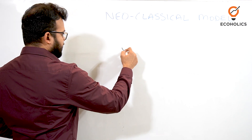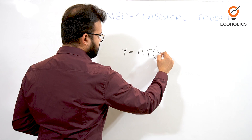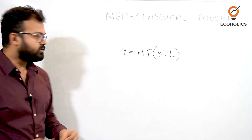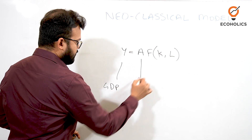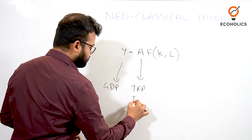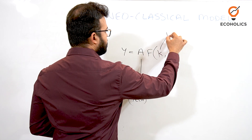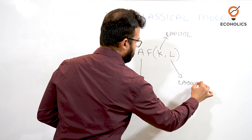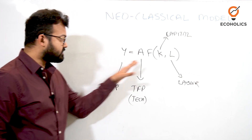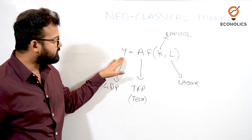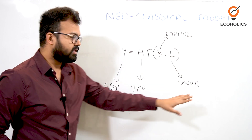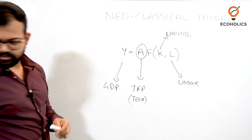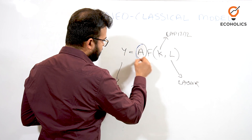When technology is exogenously determined, we write the basic equation: Y = A · f(K, L), where Y is the GDP growth rate, A is total factor productivity (which we call technology), f is the function, K is capital, and L is labor. This equation shows that GDP growth rate depends on technology, capital, and labor.